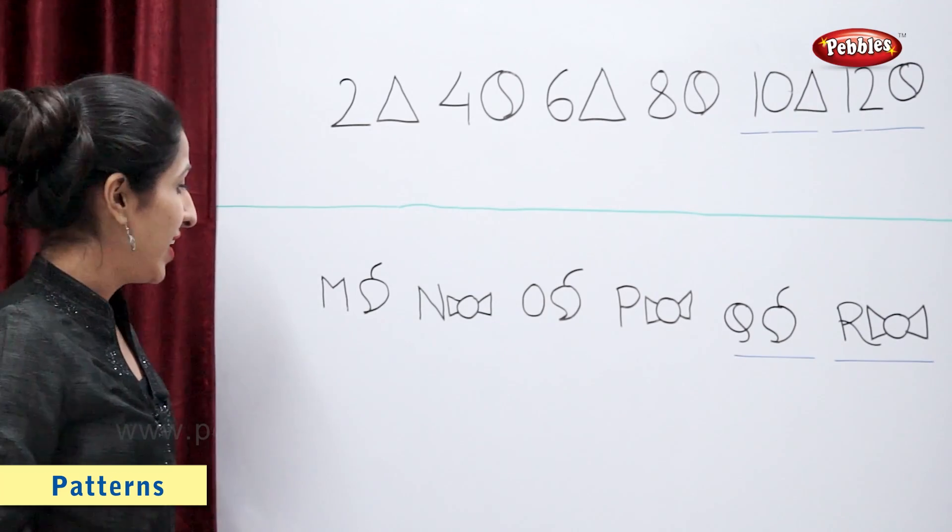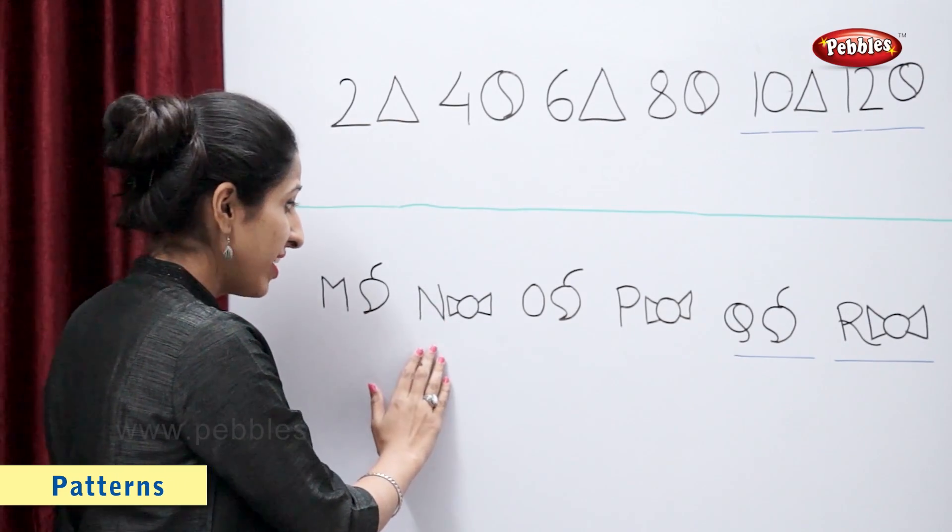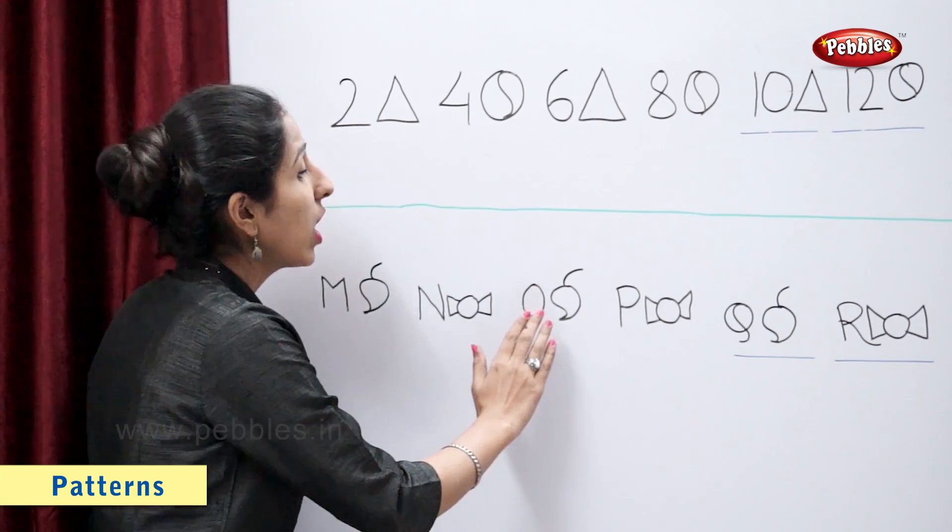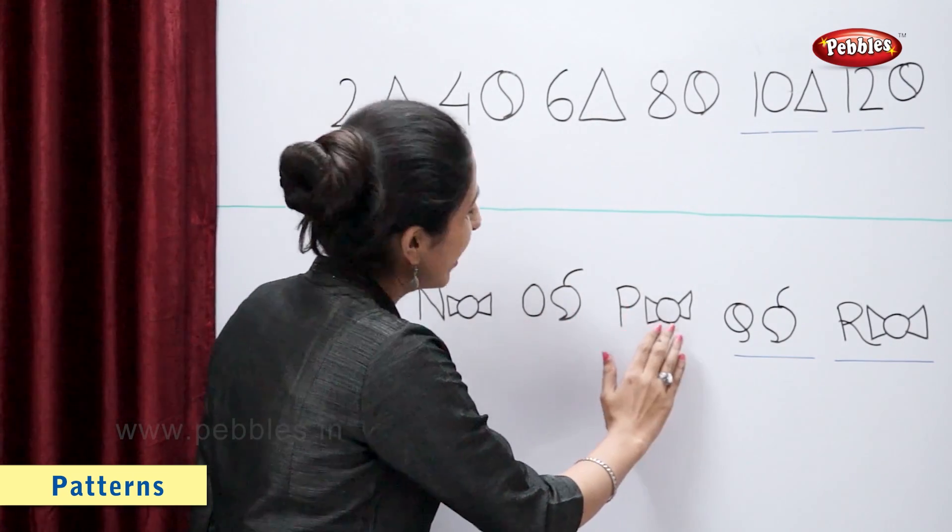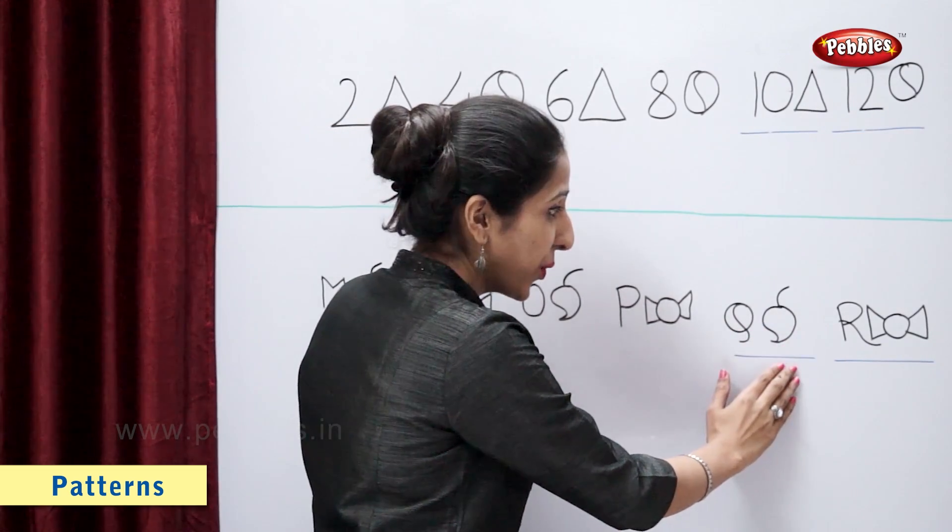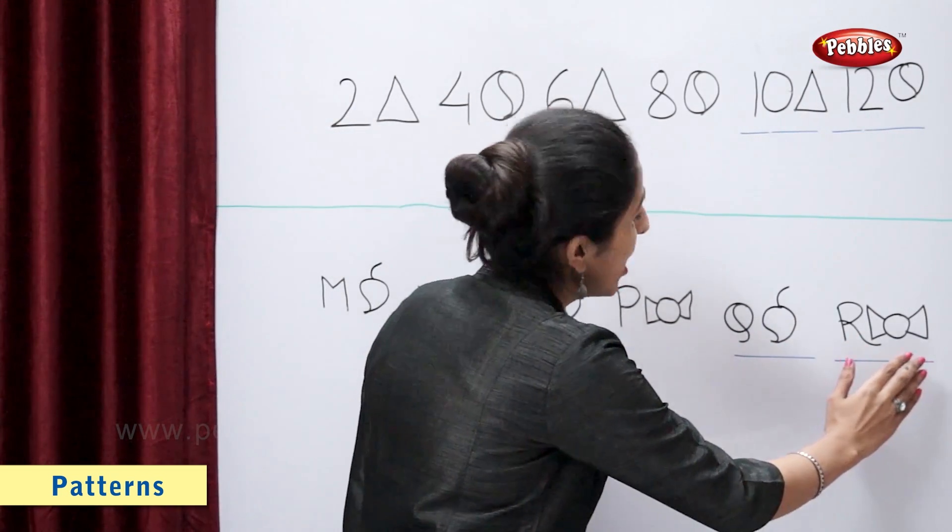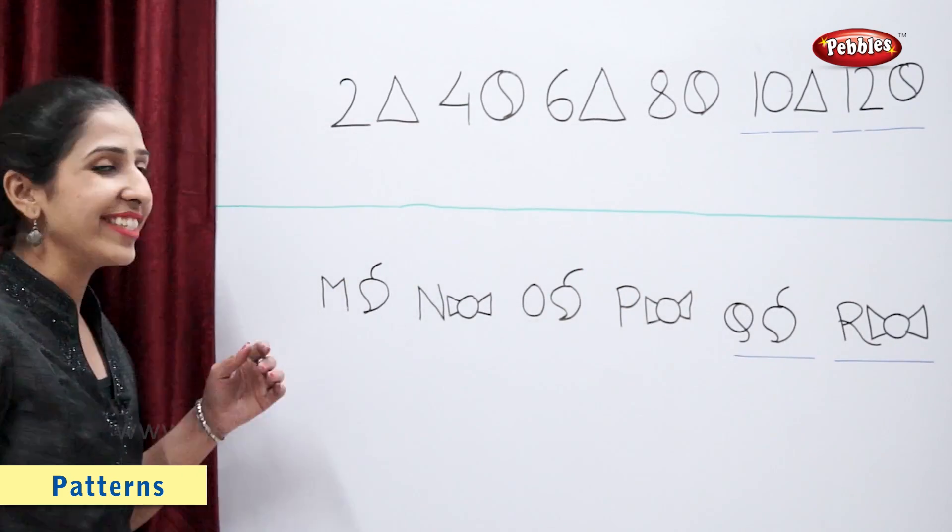So, M mango, N toffee, O mango, P toffee, Q mango, R toffee. So this is a complete pattern.